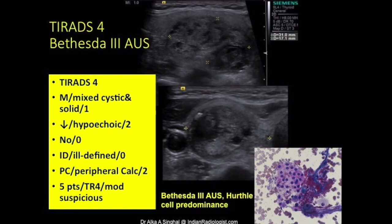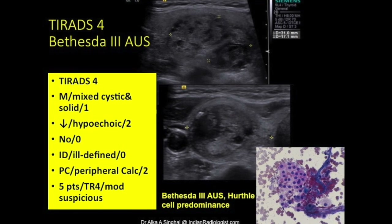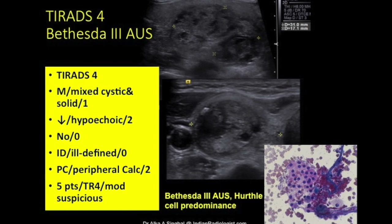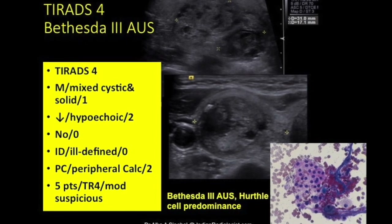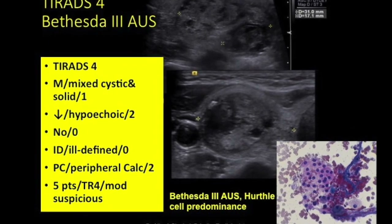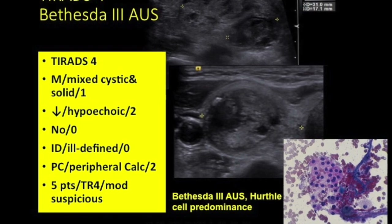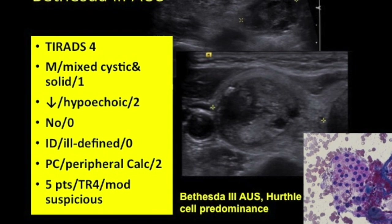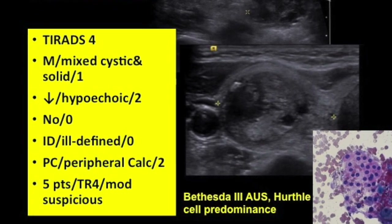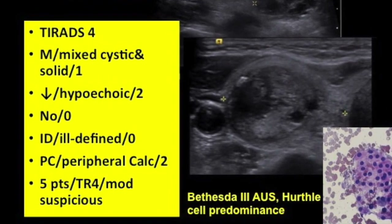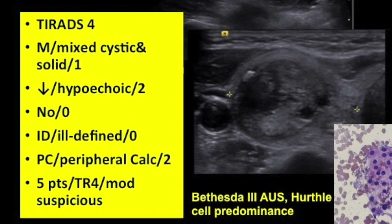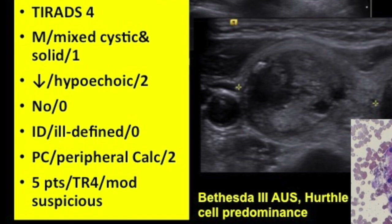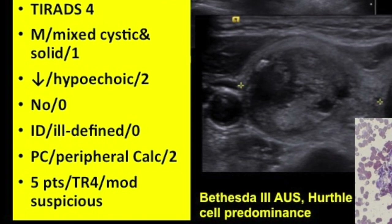Next case: again TI-RADS 4. A mixed solid-cystic nodule measuring 31 x 17 mm. Hyperechoic gets two. Not taller than wide. Margins are slightly ill-defined — zero. There is an area of peripheral calcification — two points. Total: five points, TR4 — moderately suspicious. Biopsy was Bethesda 3, AUS with Hürthle cell predominance.